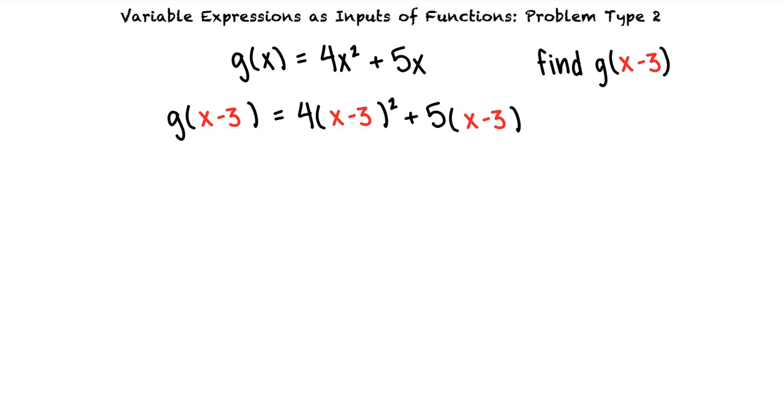We first need to evaluate our exponential expression, so we'll square the quantity x minus 3. Next, we will use distribution to multiply 4 times x squared minus 6x plus 9 and 5 times x minus 3. We can now combine like terms.